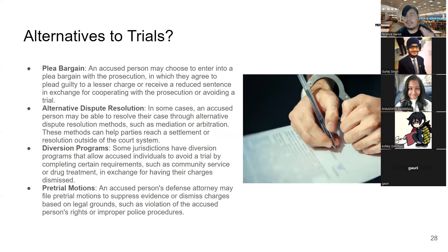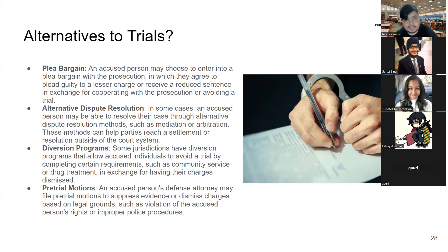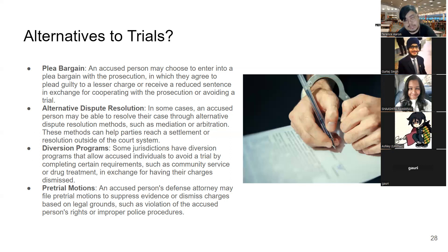Pre-trial motions are another alternative — for example, if evidence was obtained illegally, you can suppress it, meaning there's no proper case to bring to court. In Lim Guan Eng's case, the courts found insufficient evidence because through pre-trial motions they managed to drop the case, pointing out that a lot of the evidence had a political bent to it and the charges were largely trumped up.